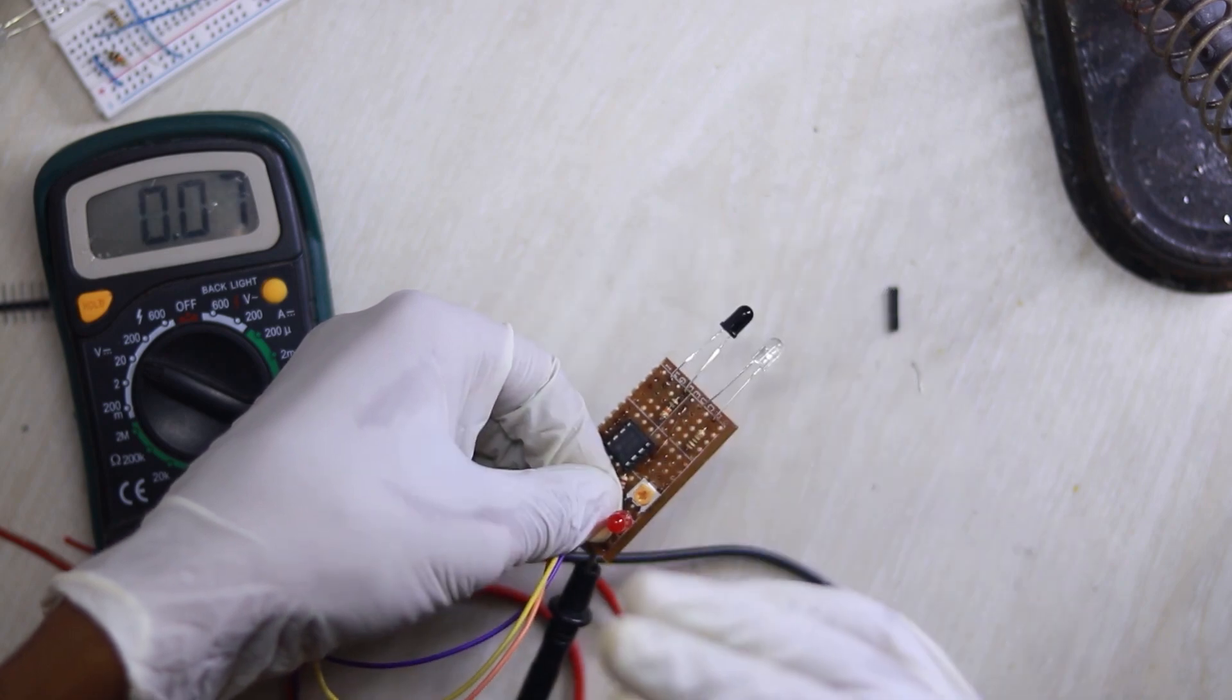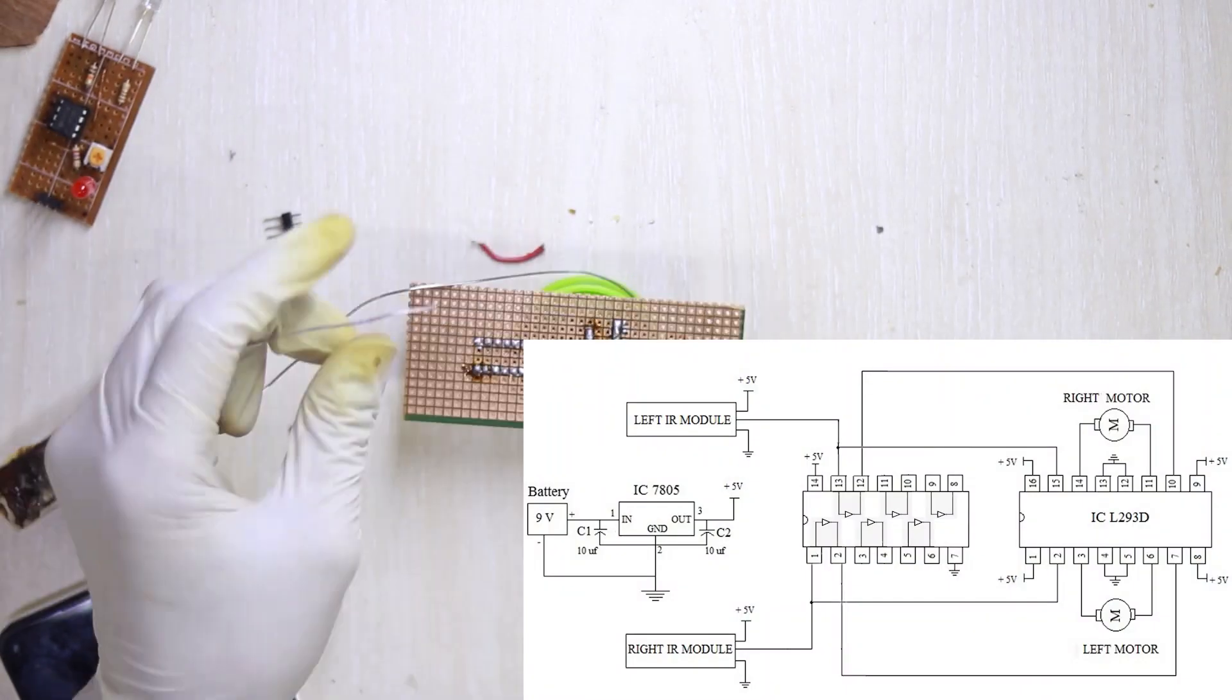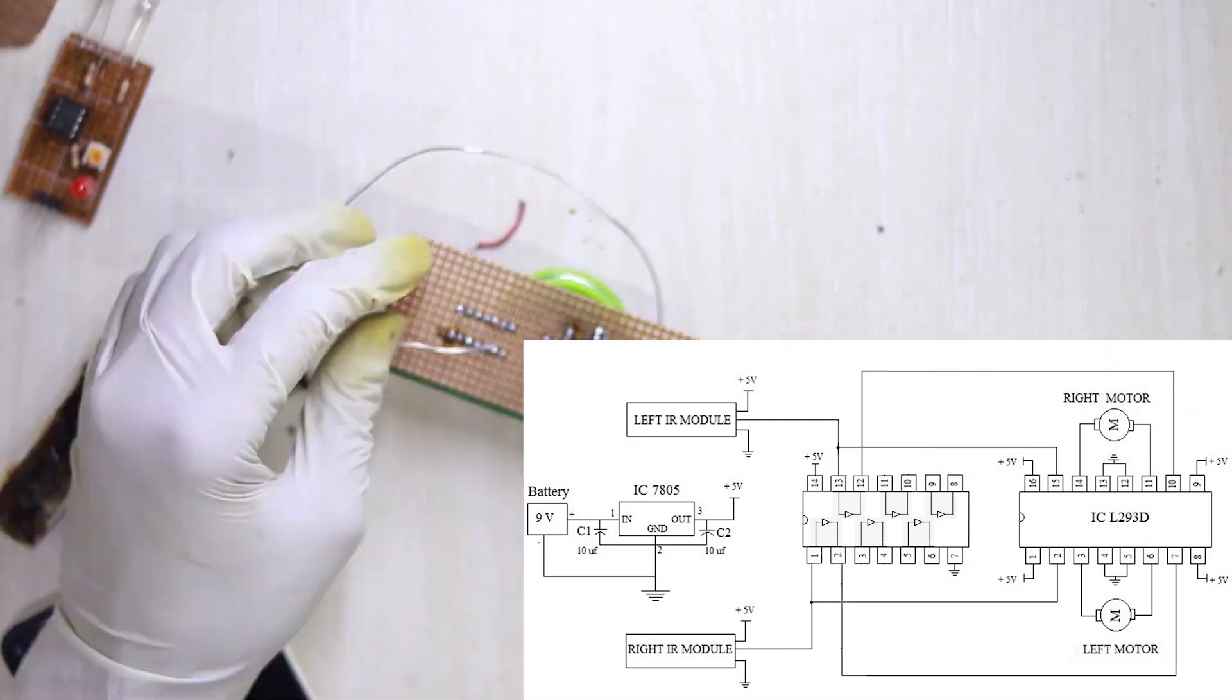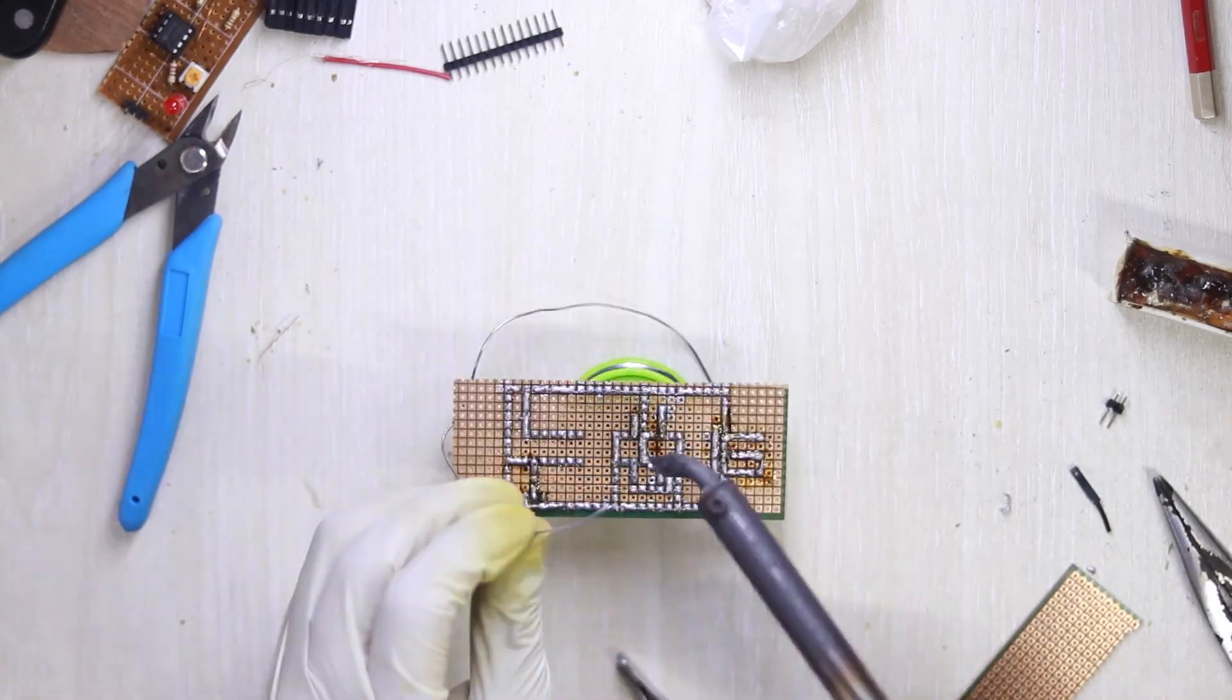This is the whole circuit diagram. First of all, I made a 5-volt regulator to supply power to the circuit. I simply connected components one by one using the circuit. As you can see, the circuit board is completely done.